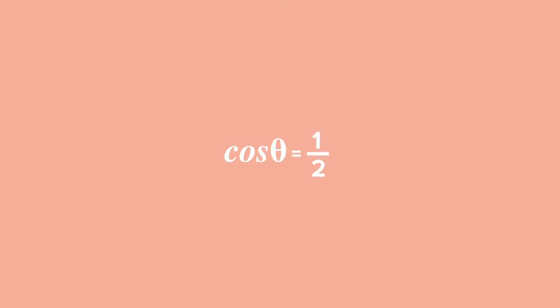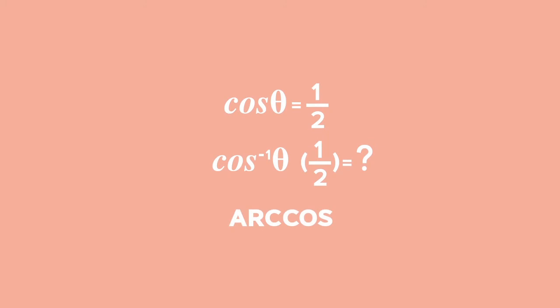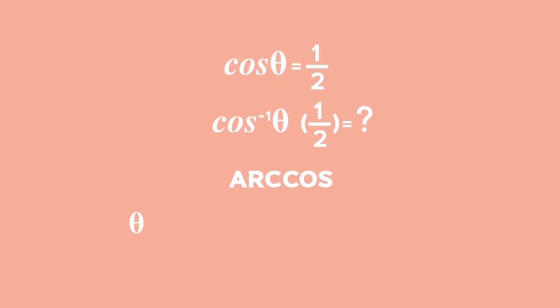For cos theta equals 1 half, you can use your calculator or special angles. Use the second function or shift key to calculate the angle. When you use the inverse cosine on your calculator, you are using a function called arccos — the inverse function of the cosine function — used to calculate the angle corresponding to a specific ratio for a given trig function. You will get theta equals plus or minus 60 degrees plus k times 360 degrees, where k is an element of integers, as the general solution.